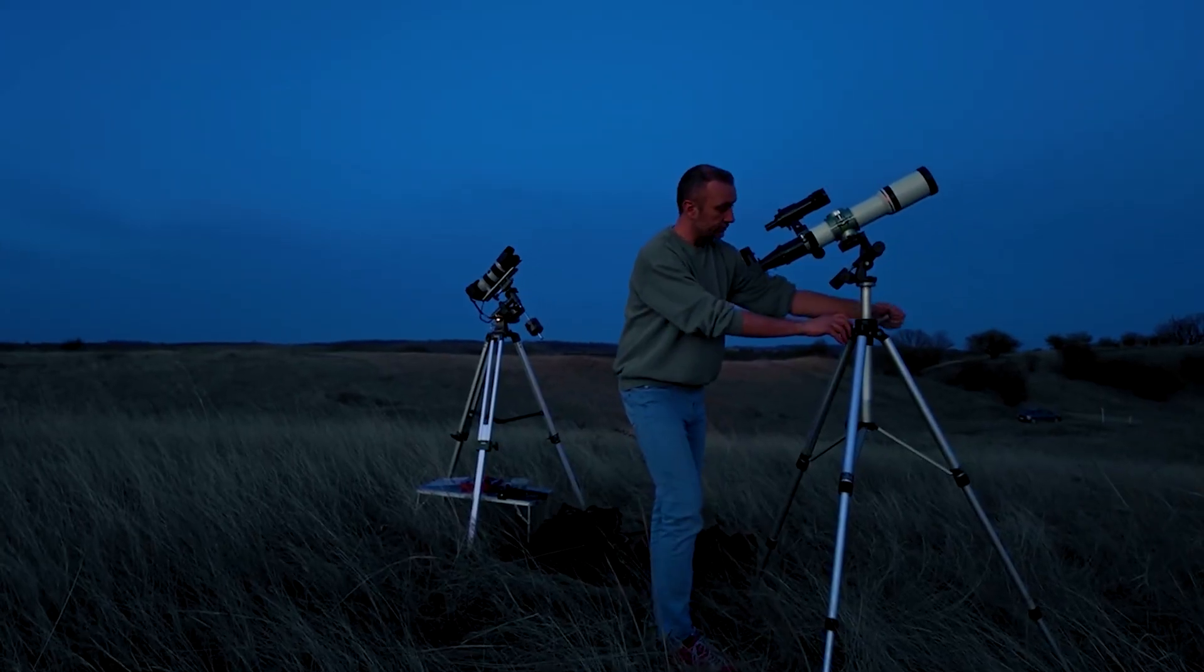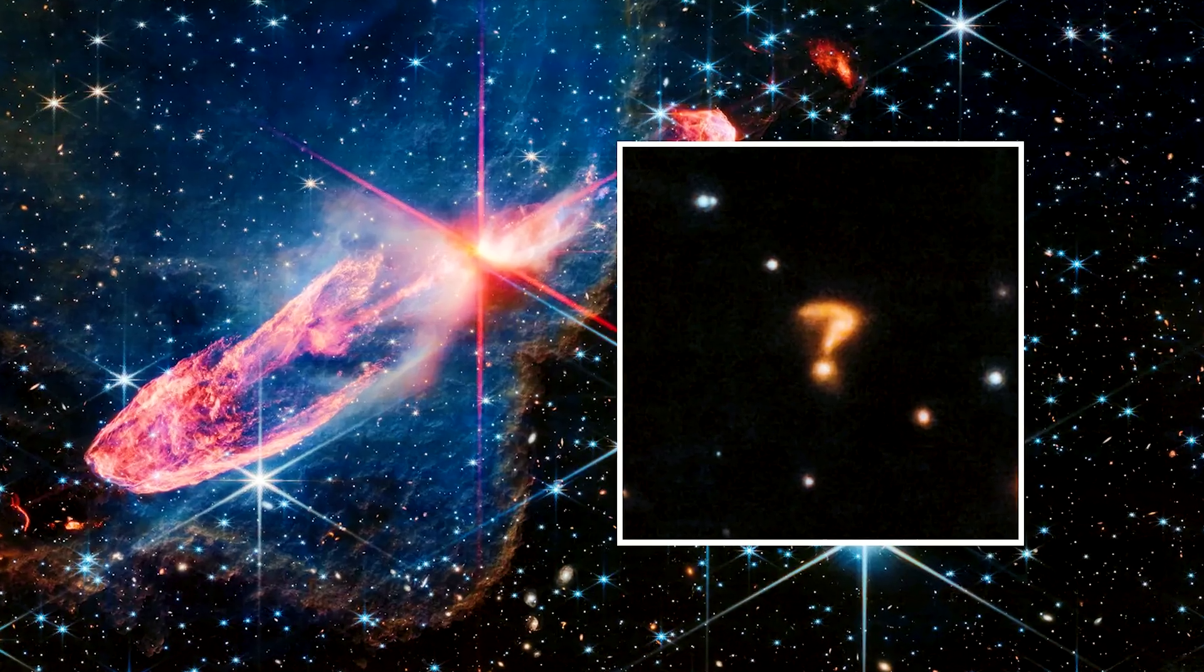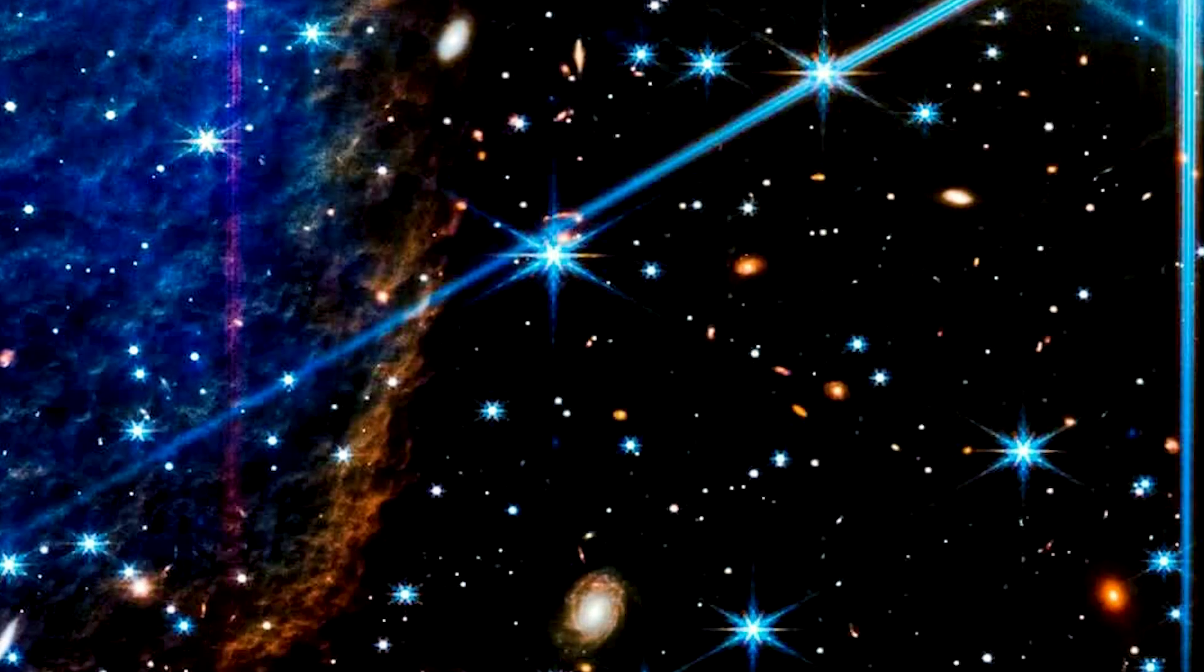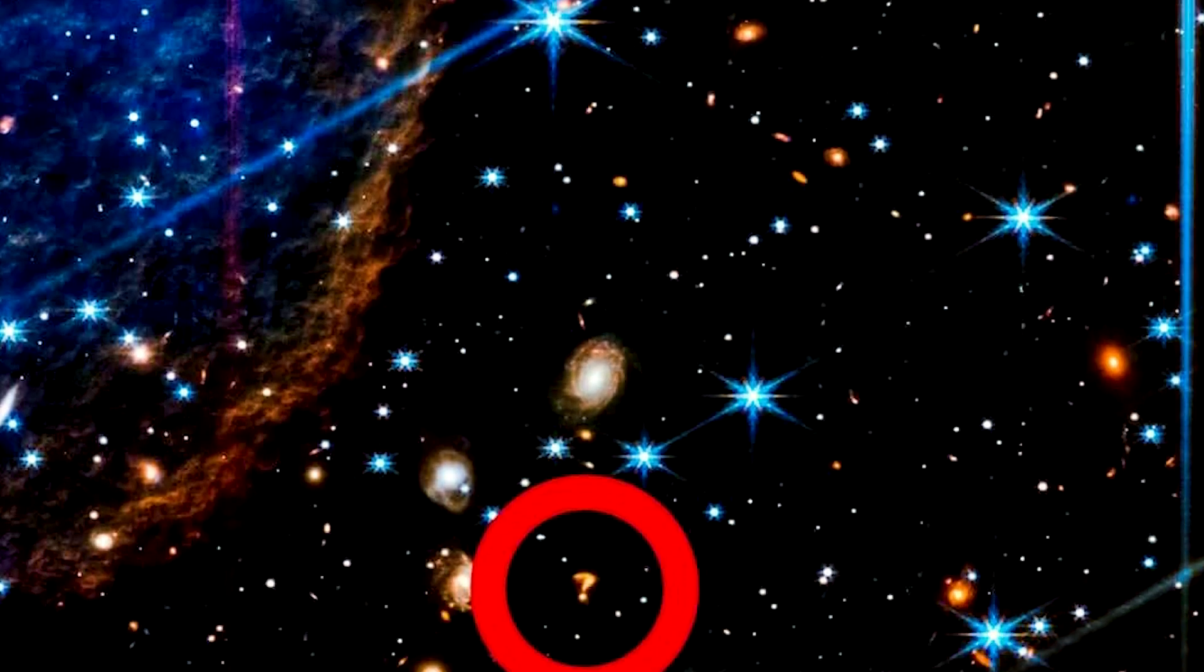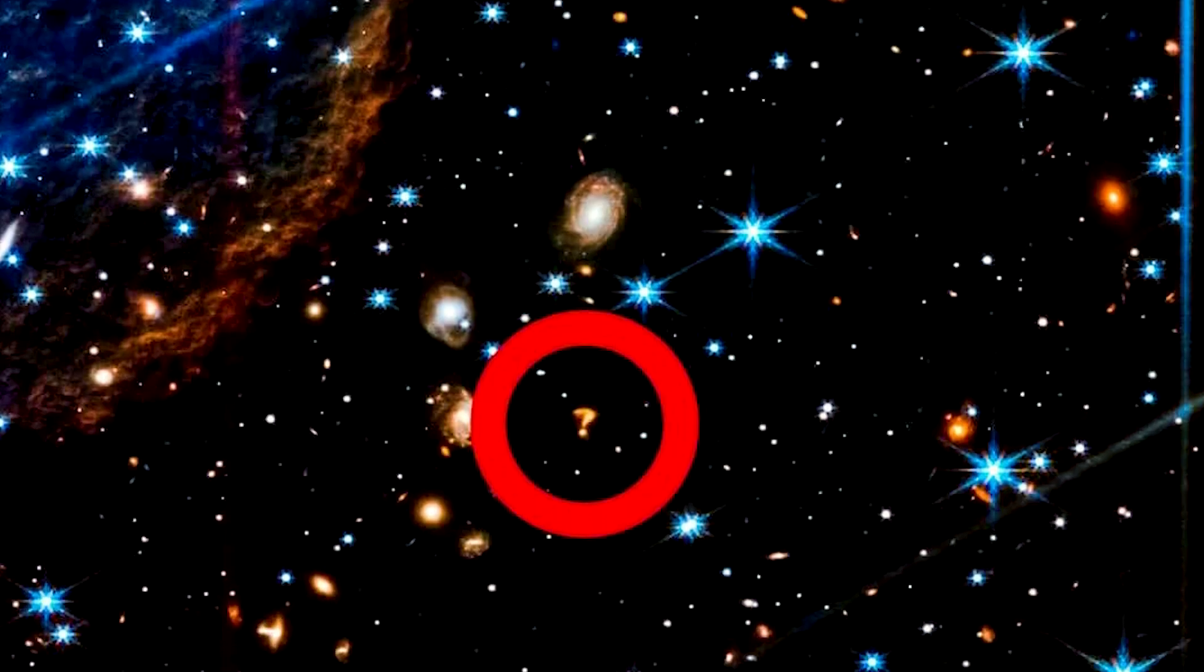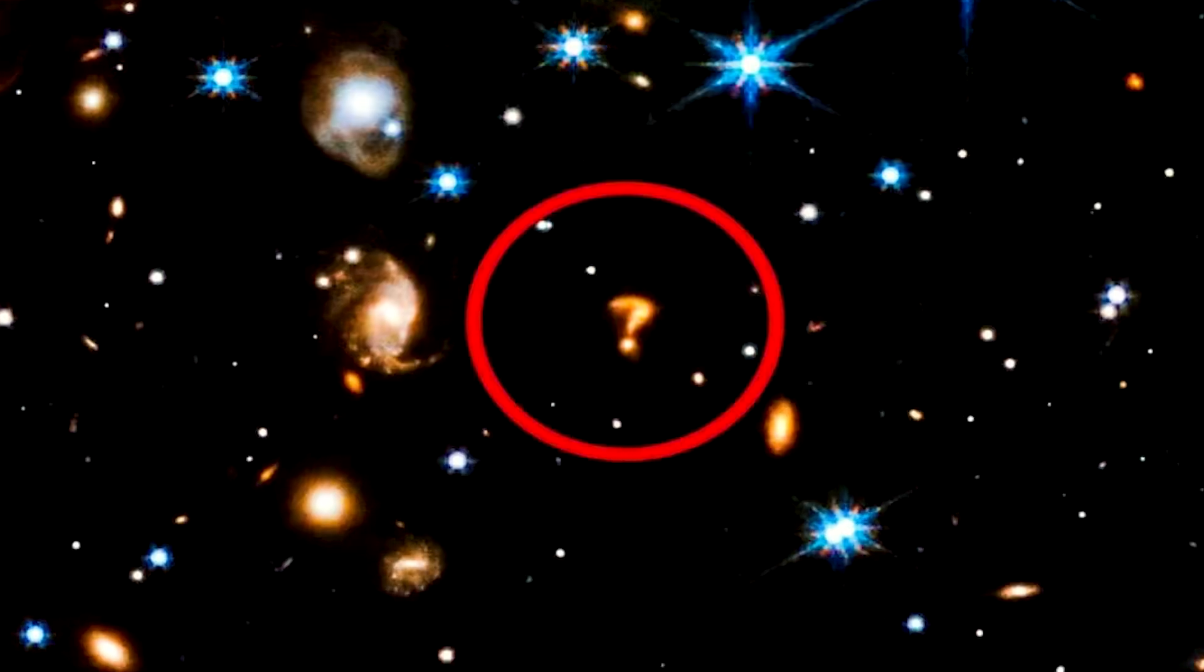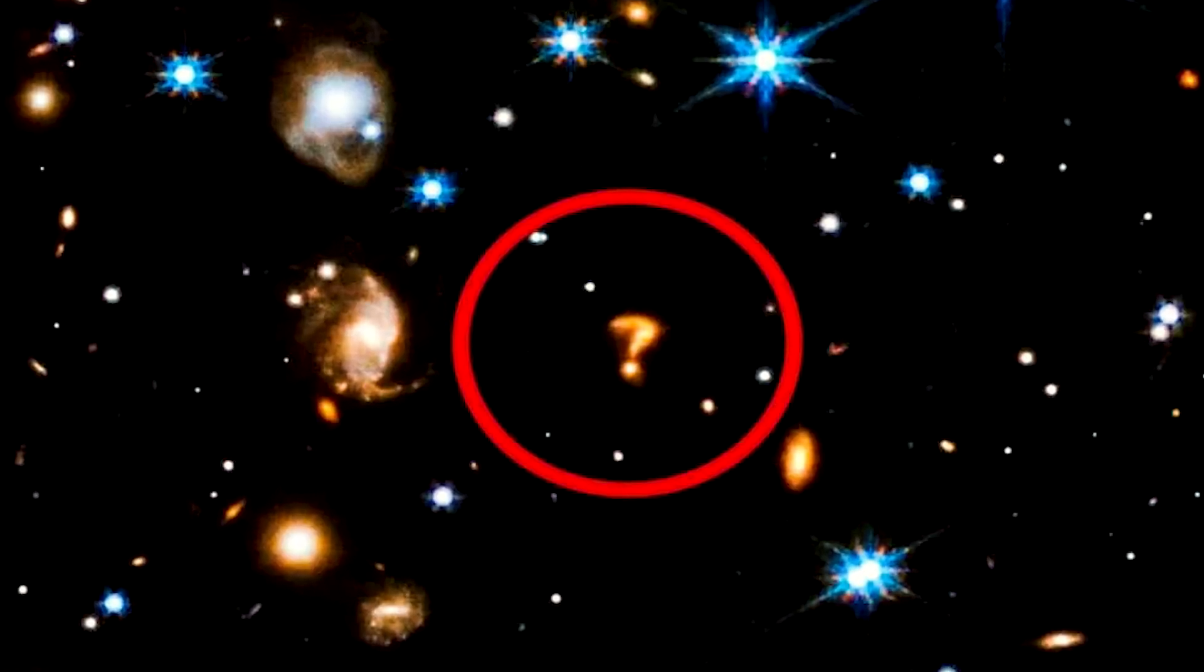When astronomers tried to solve this question mark, they discovered that it was being formed by two distant galaxies whose light was being distorted by the intense gravity of a galactic cluster in the foreground, forming a distorted shape that from our point looks exactly like a question mark.